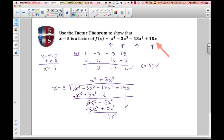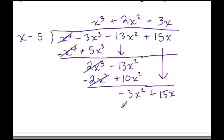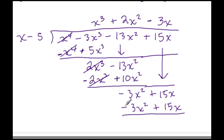We bring down positive 15X. We ask what to multiply X by to get negative 3X squared — that's negative 3X. So negative 3X times X gives negative 3X squared, and negative 3X times negative 5 gives positive 15X. We distribute the negative, changing the signs: negative becomes positive and positive becomes negative.